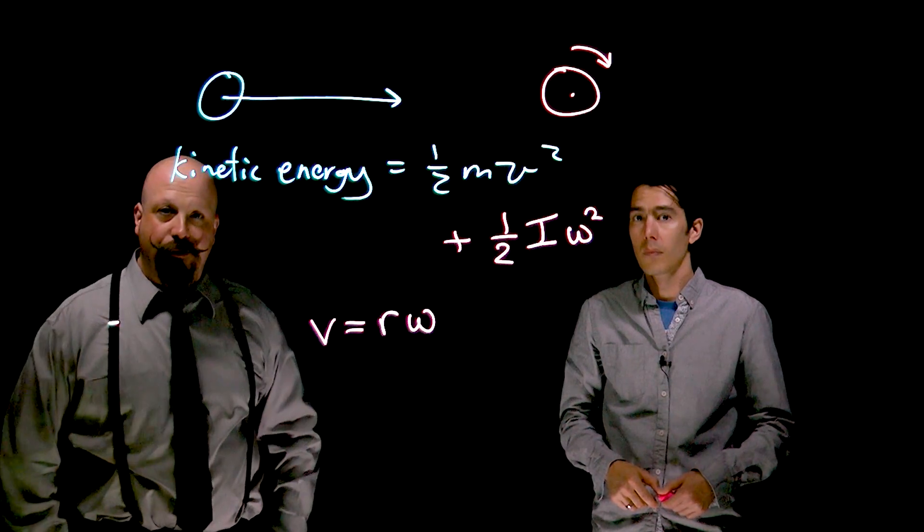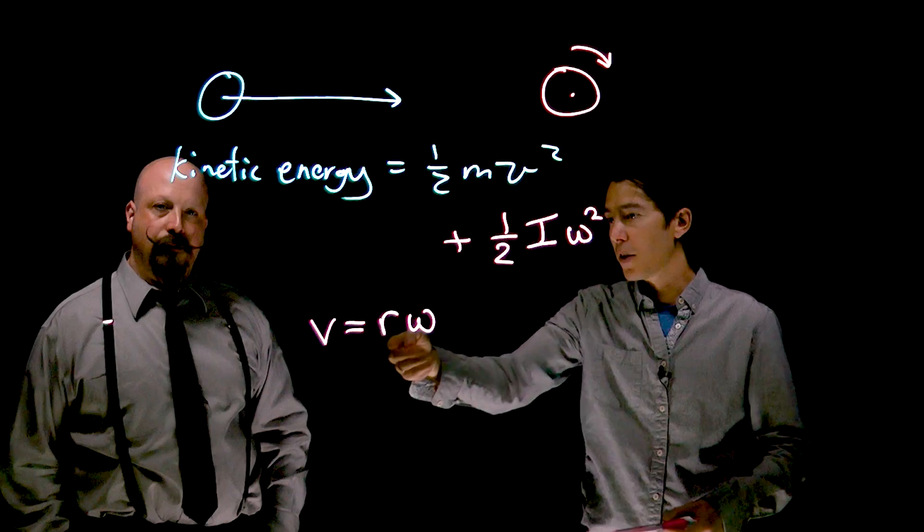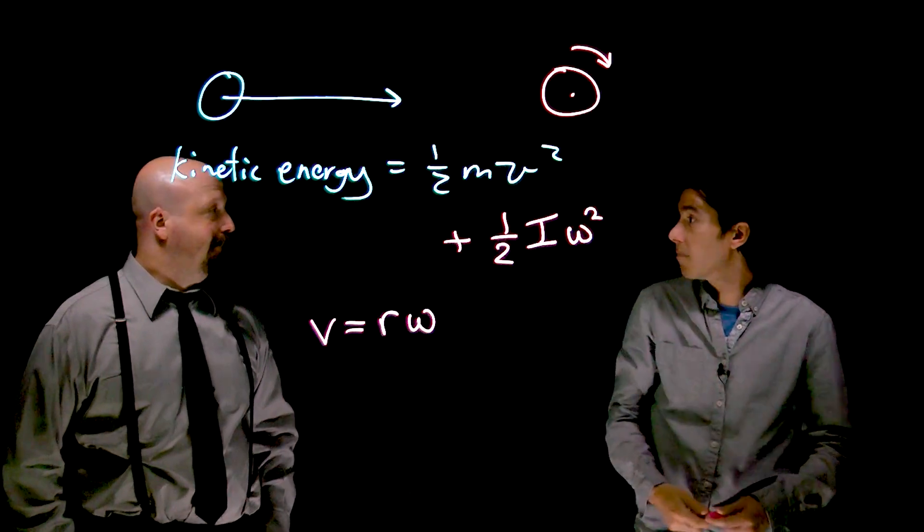Say you're going at 100 kilometers an hour - we have V. If you know the size of your tires, we can get omega, and that will lead us to the total kinetic energy.